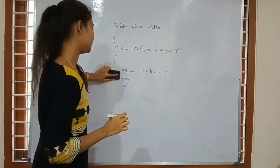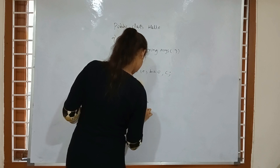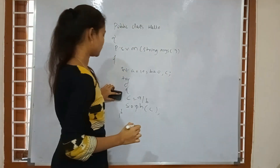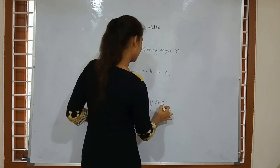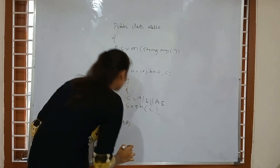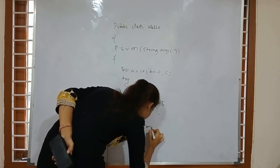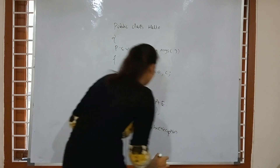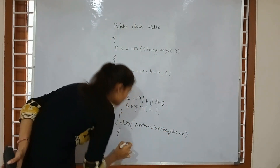Whatever exception occurs, we need to write it in the try block. In order to continue the normal flow of execution, we need to give an alternate solution for this exception in the catch block. Here it will throw an arithmetic exception, so we write the alternate solution in the catch block. In the catch block we write the kind of exception — here I am writing ArithmeticException — and we give the reference object as E.